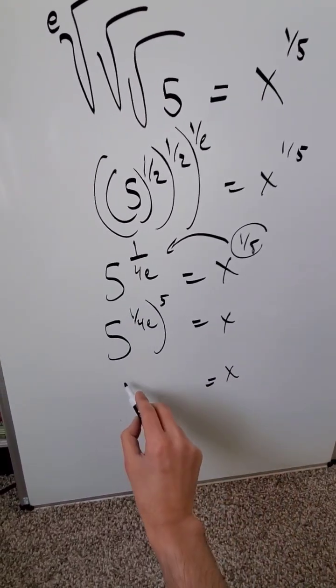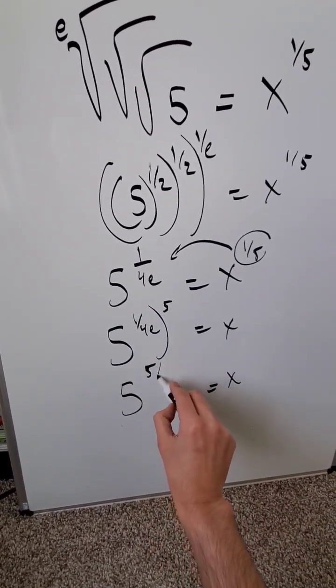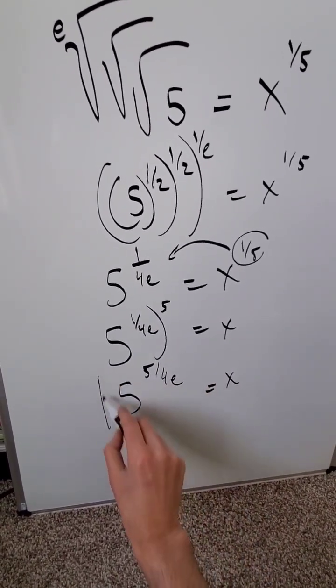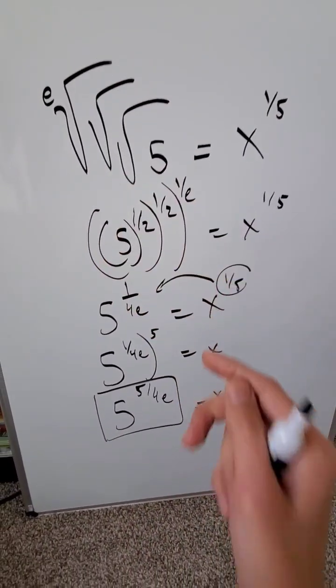Open this up. x here is equal to 5 to the power of 5 over 4e. That right here is the value of x for which this expression will be good.